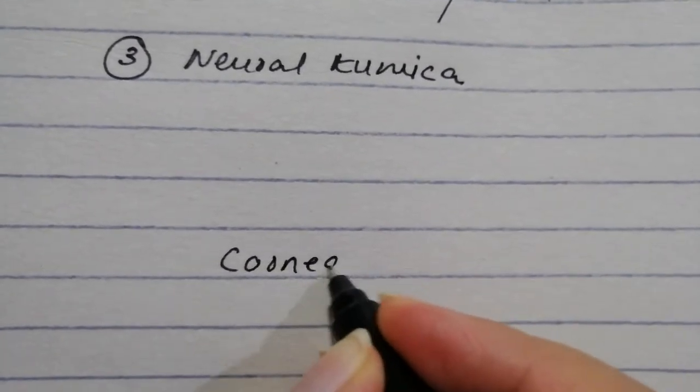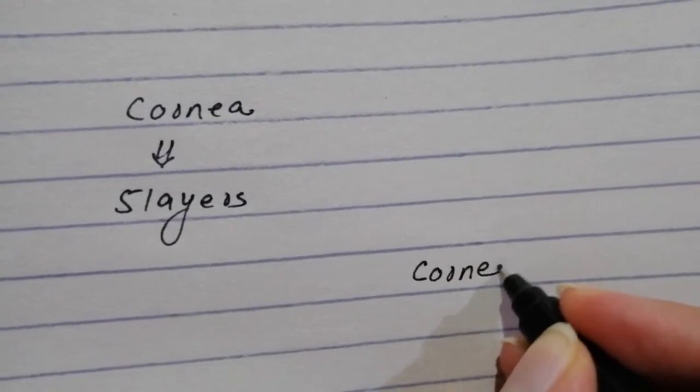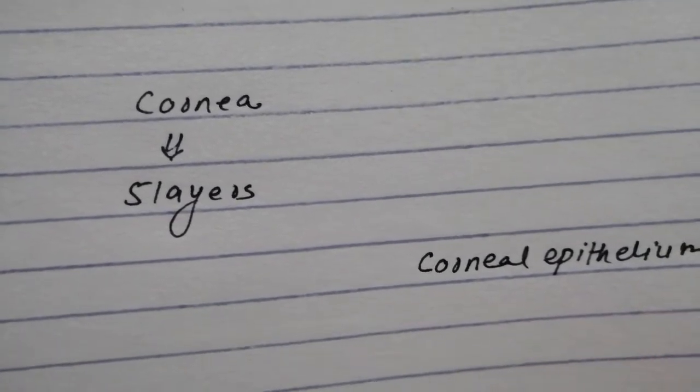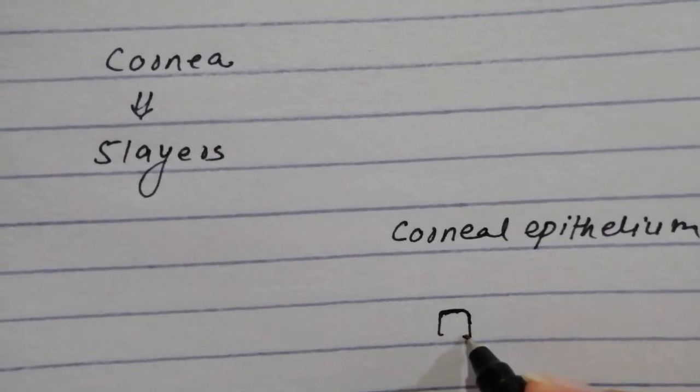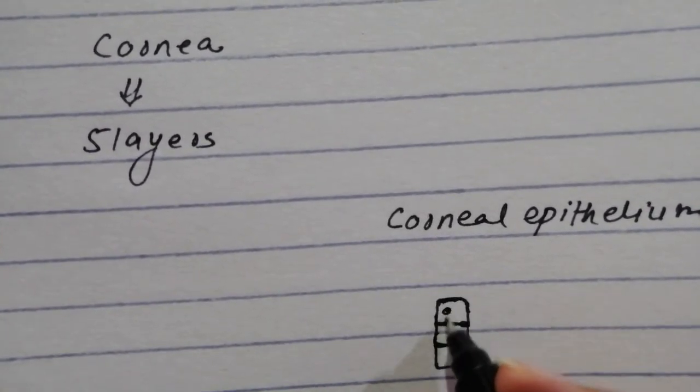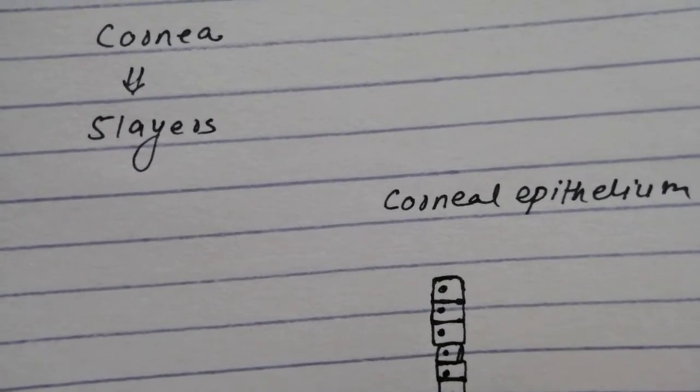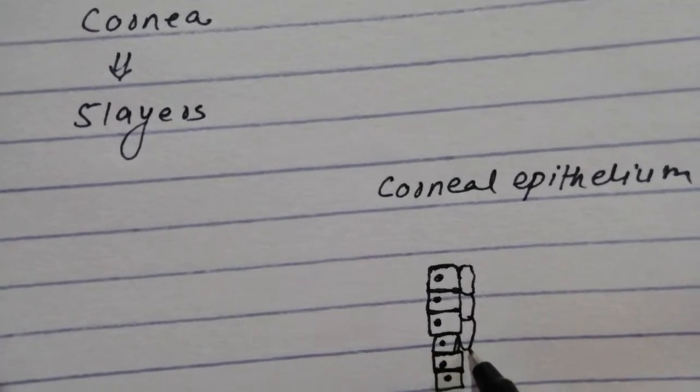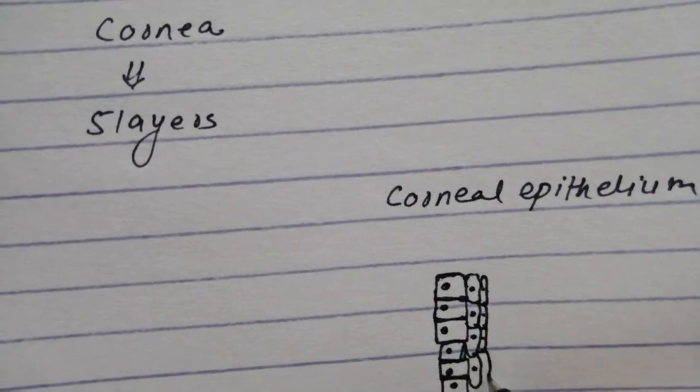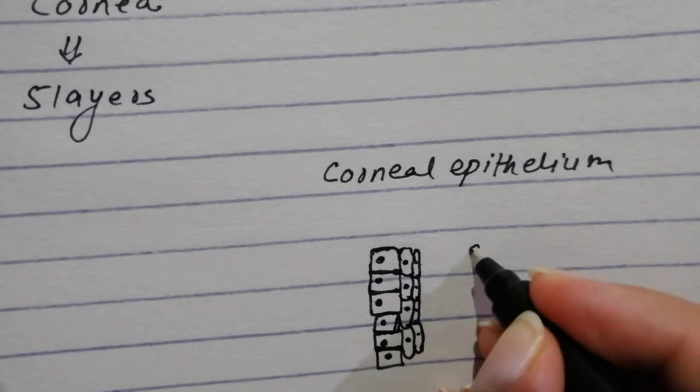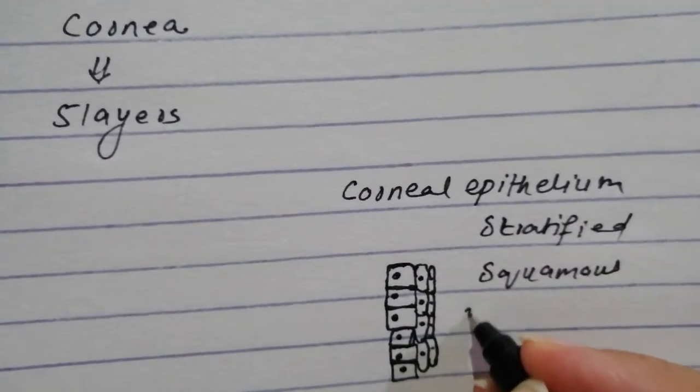The cornea has a total of five layers. From the outside to the inside we have the corneal epithelium. The corneal epithelium is stratified squamous non-keratinized. When you're drawing stratified squamous non-keratinized, you start with drawing cuboidal cells in the basal layer because the basal layer has the stem cells that continuously proliferate to produce cells that migrate to the most superficial layers. Then you start drawing progressively flatter cells.